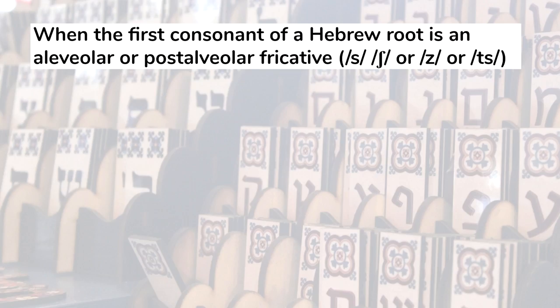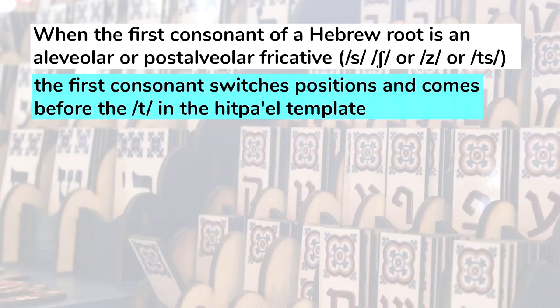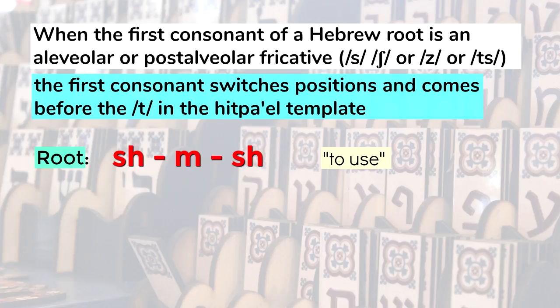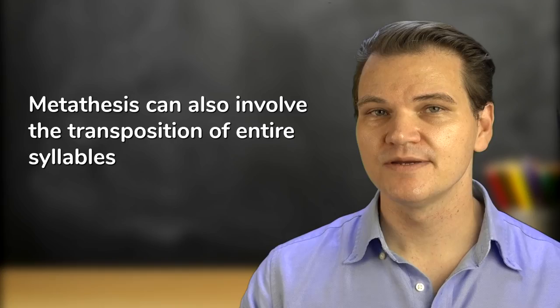When the first consonant of a Hebrew root is an alveolar or post-alveolar fricative — like an s, sh, z, or tz sound — then the first consonant switches positions and comes before the t in the hitpa'el template. For example, we have the root sh-m-sh, which means 'use', which in the hitpa'el template becomes 'hishtamesh' rather than 'hishtShamesh', so you can see that the t and the sh have changed places.